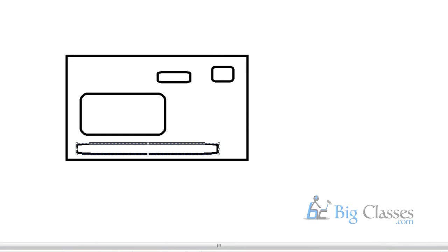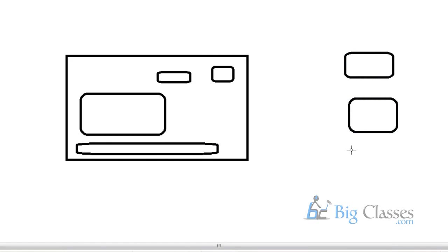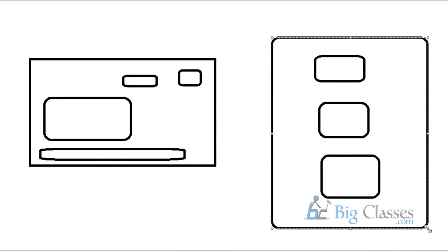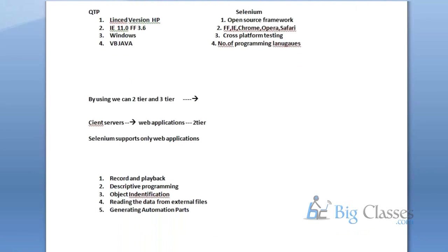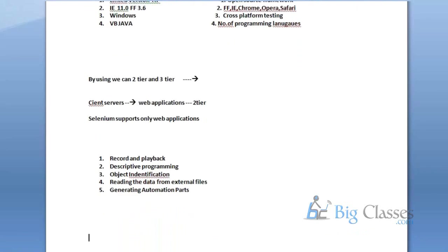But if you look at Selenium, for record and playback you need a third-party API. If you want to identify objects, you need another third-party tool. Selenium doesn't have a specific single inbuilt tool — Selenium depends on a number of third-party APIs. So you can say Selenium is a suite of tools. And each tool is open source. Whatever third-party tools we use in Selenium, all of them are again open-source tools.